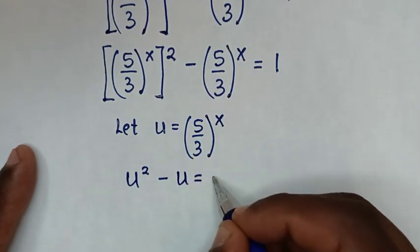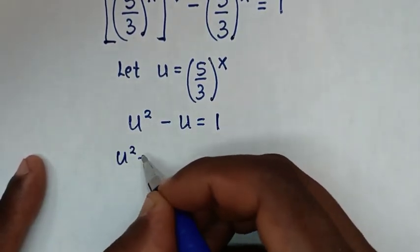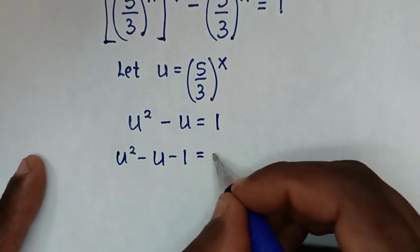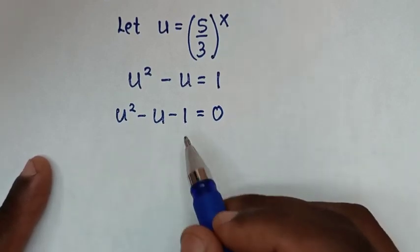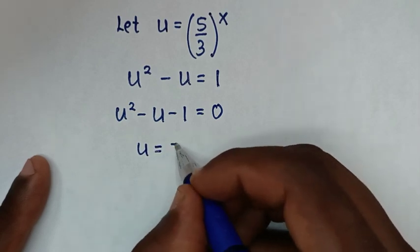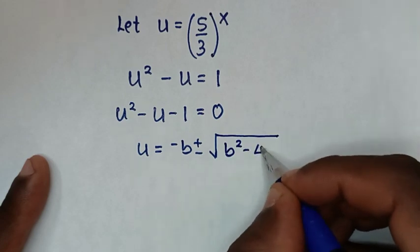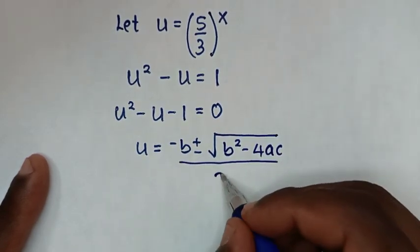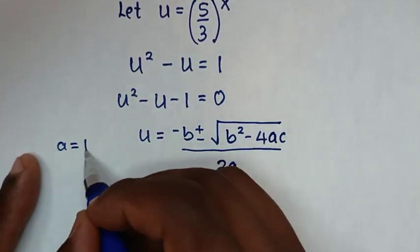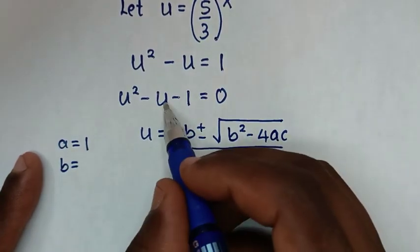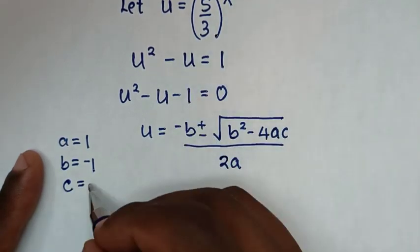Taking 1 to the left side gives the quadratic equation u² minus u minus 1 equals 0. We solve using the quadratic formula: u = (−b ± √(b²−4ac)) / 2a, where a = 1, b = −1, and c = −1.